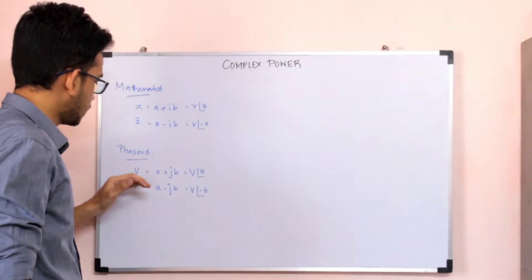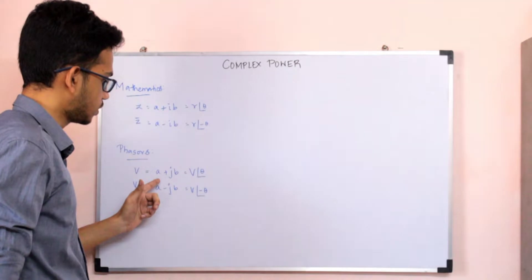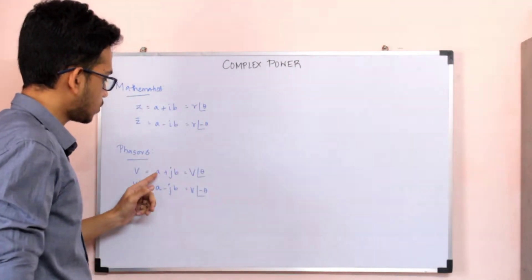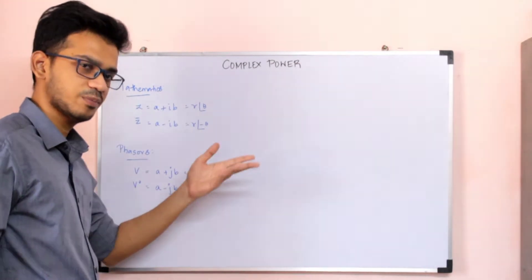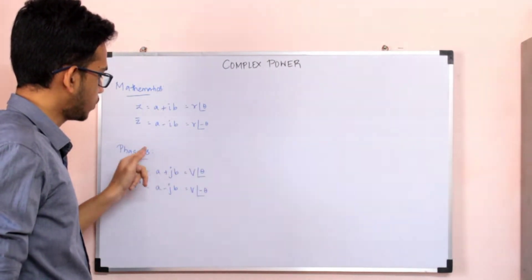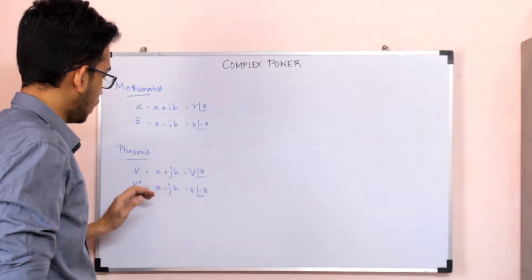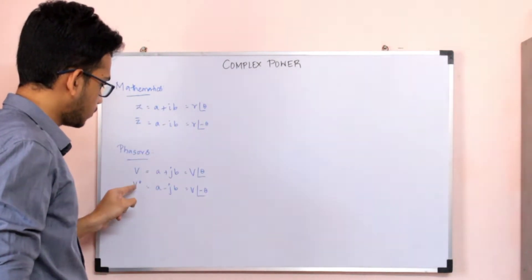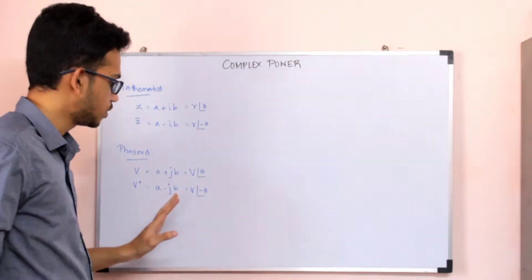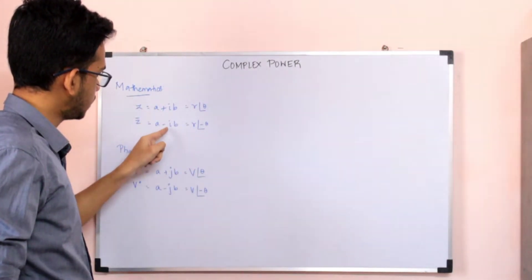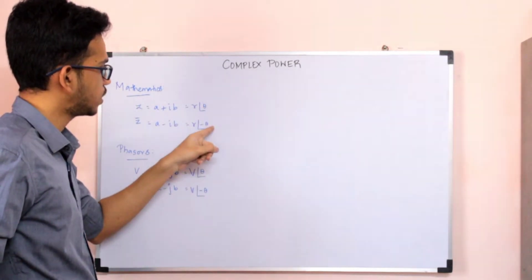If we do phasors, V is a voltage phasor. The voltage phasor has two rectangular components — one along the x-axis and one along the y-axis — so a plus jb. For example, 4 plus j3, or 4 minus j5. We use j for phasors. Same here, we have angle theta. If we denote Z-bar, then we denote V-star — that is the conjugate. To find the conjugate: change the imaginary part sign in rectangular form, or change the angle sign in polar form.